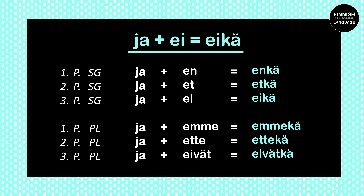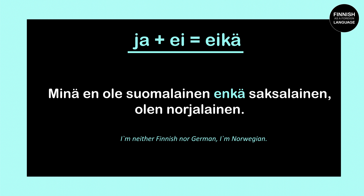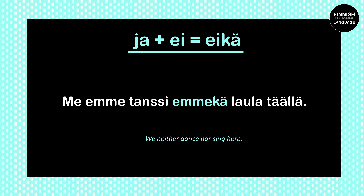Let's practice a bit. Minä en ole suomalainen, enkä saksalainen, olen norjalainen — means 'I'm neither Finnish nor German, I'm Norwegian'. So here we have enkä because of the personal pronoun minä. Next example: me emme tanssi emmekä laula täällä — means 'we neither dance nor sing here'. So here we use emmekä because of the personal pronoun me.